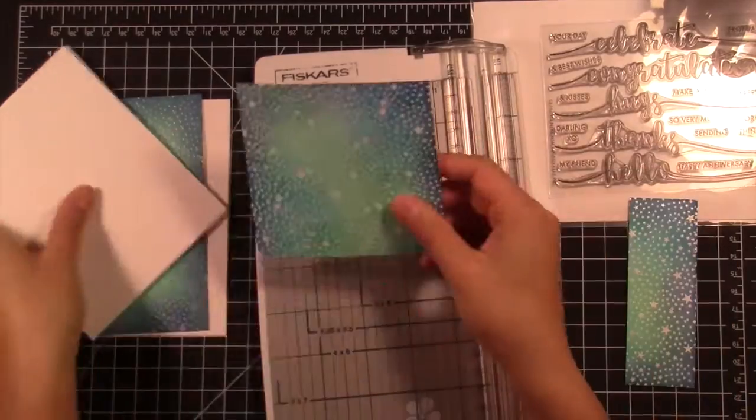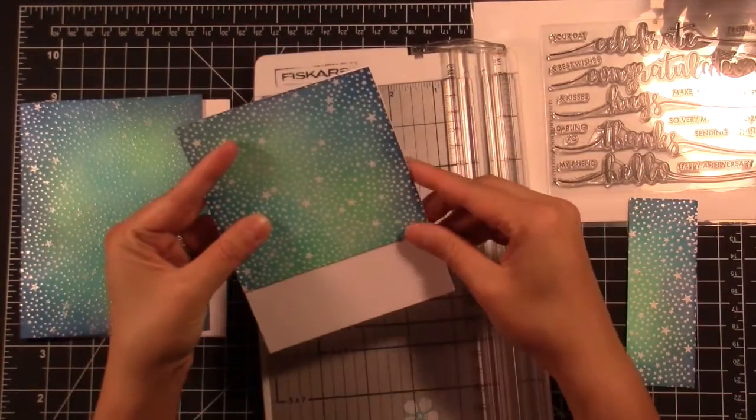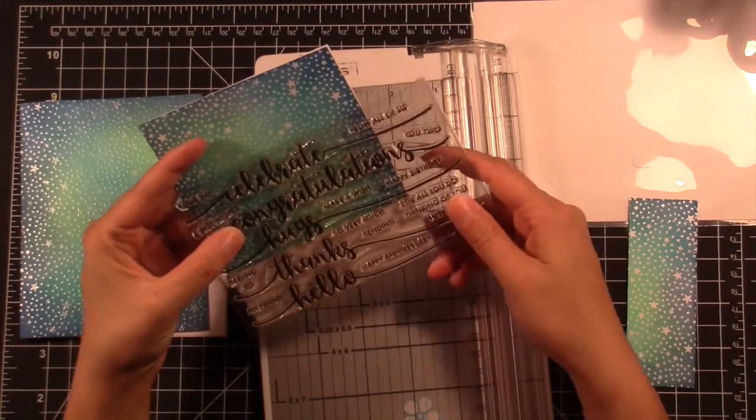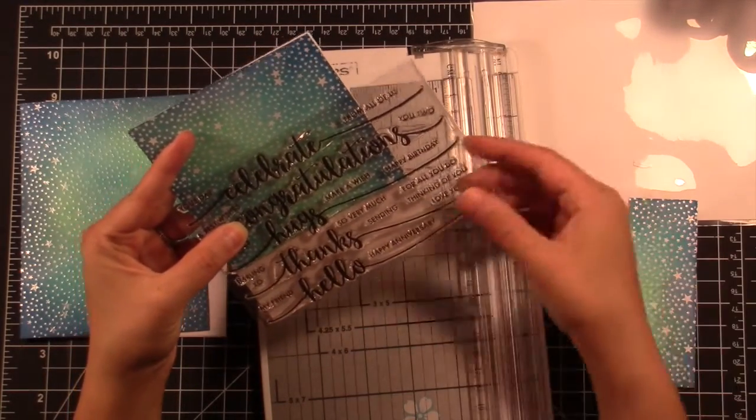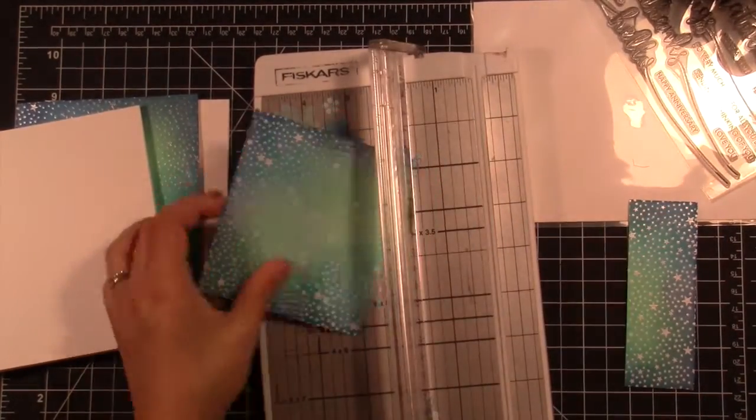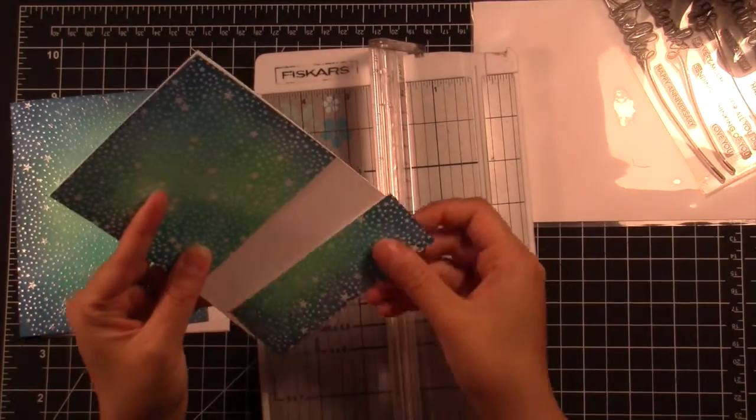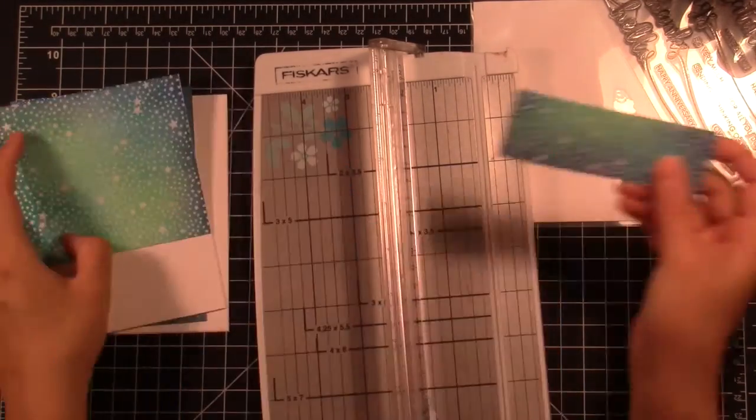So once I went ahead and heat set all of those, I'm just kind of eyeballing exactly how I want this panel to be and how much room I needed for the sentiment. I ended up cutting down the top portion to three and three quarters of an inch tall. And this is four and a half inches wide because I wanted to take up the whole front of the card base.